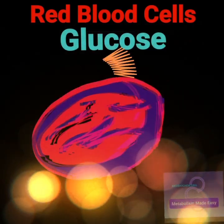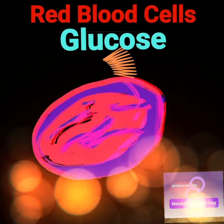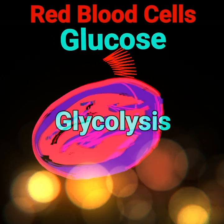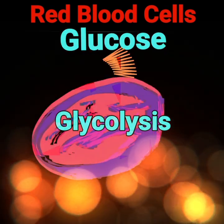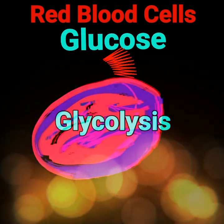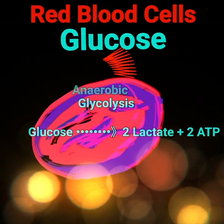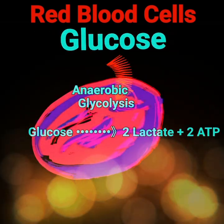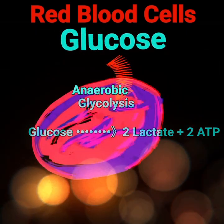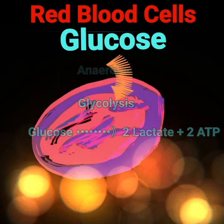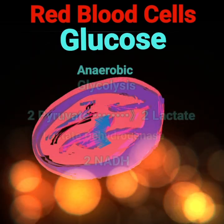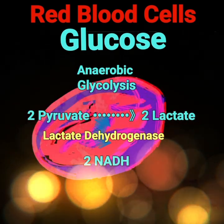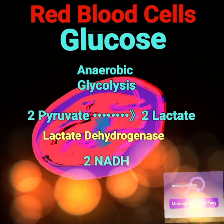Red blood cells are entirely dependent on glucose as their only energy source. Glucose is utilized in glycolysis to produce the ATP required by the red blood cell. Because red blood cells lack mitochondria, the glycolytic breakdown of glucose to two lactates produces only two ATPs. The NADH produced from the glyceraldehyde 3-phosphate dehydrogenase step is consumed in the conversion of two pyruvates to two lactates.